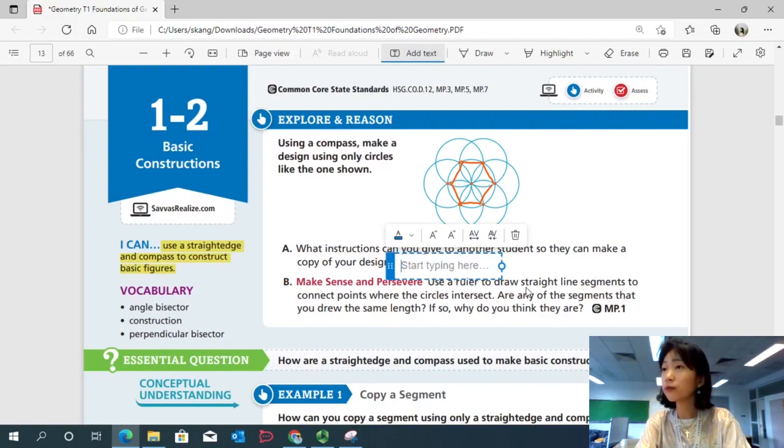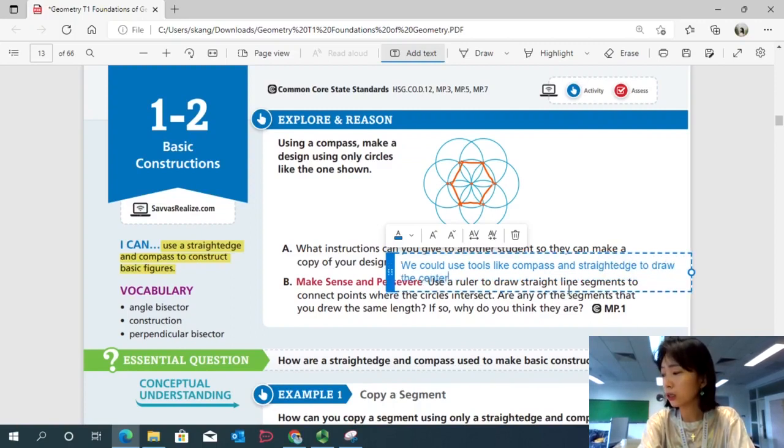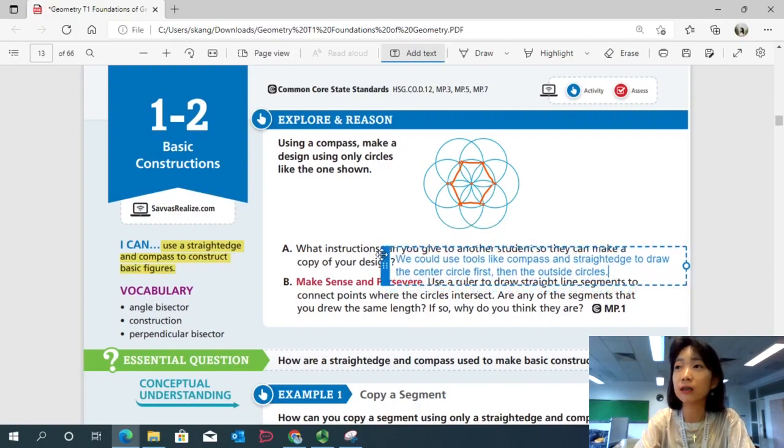So first, you can say that we could use tools like compass and straightedge or a ruler to draw the center circle first, then the outside circles. And you can describe the process as you go.